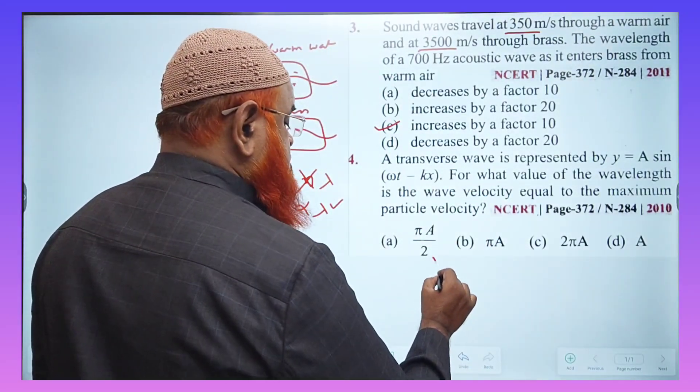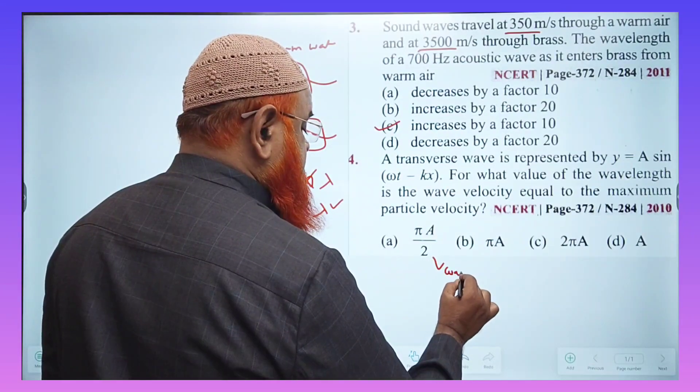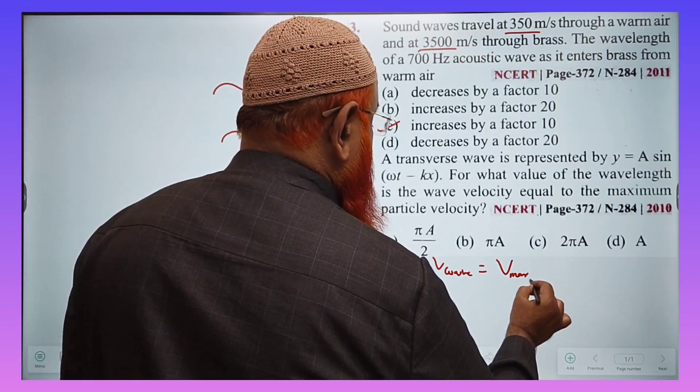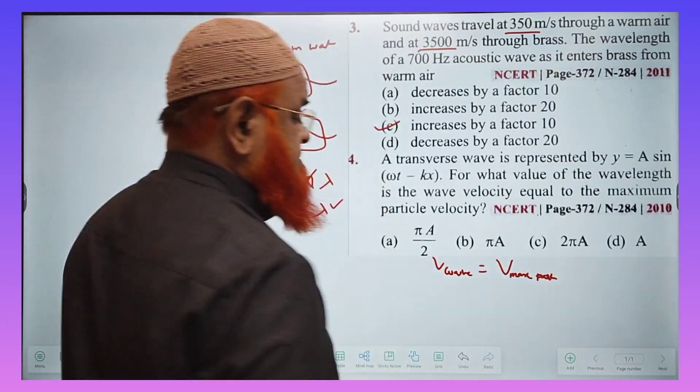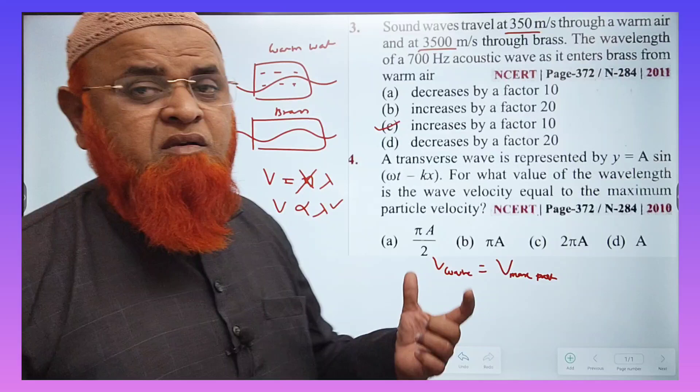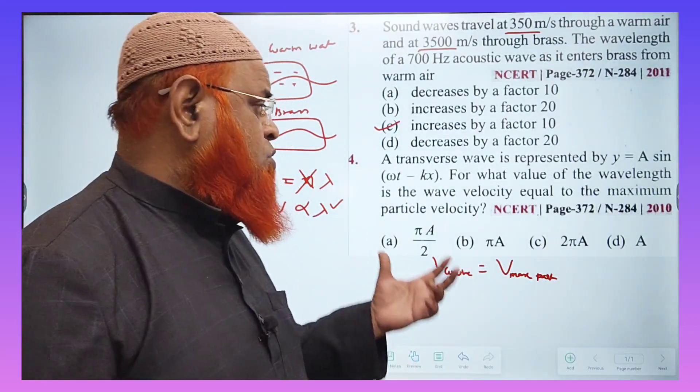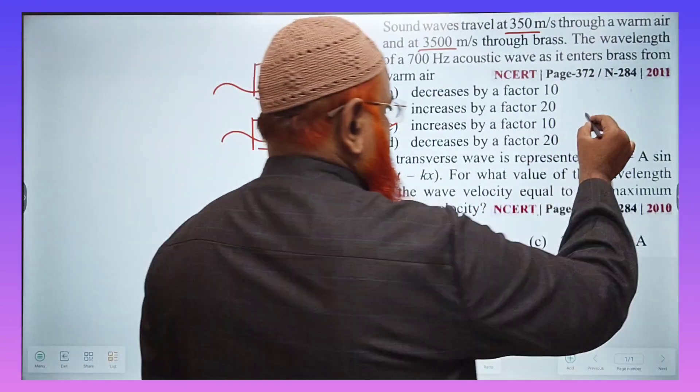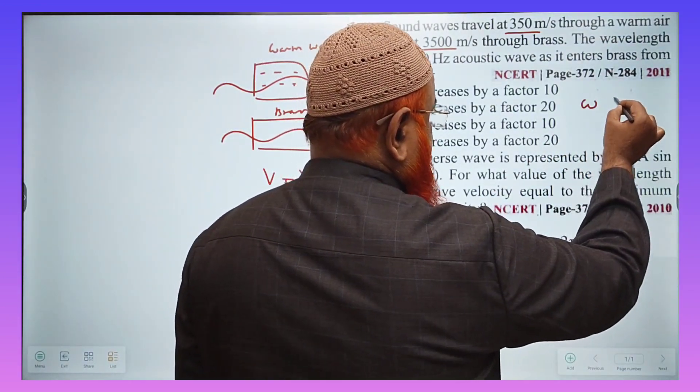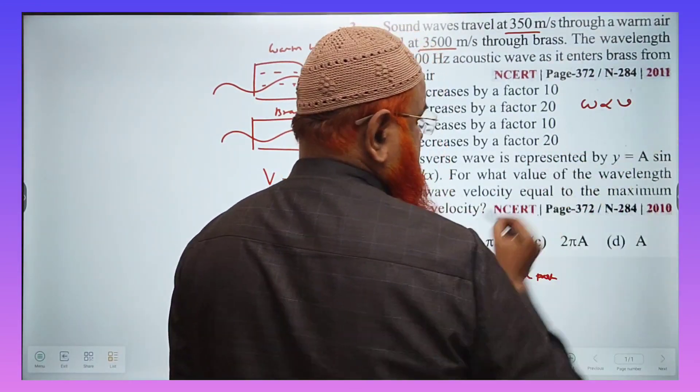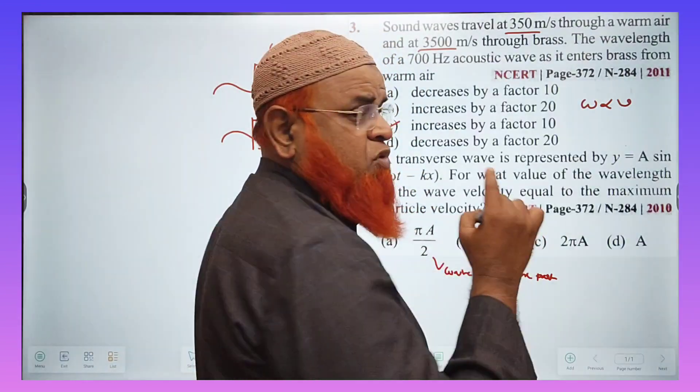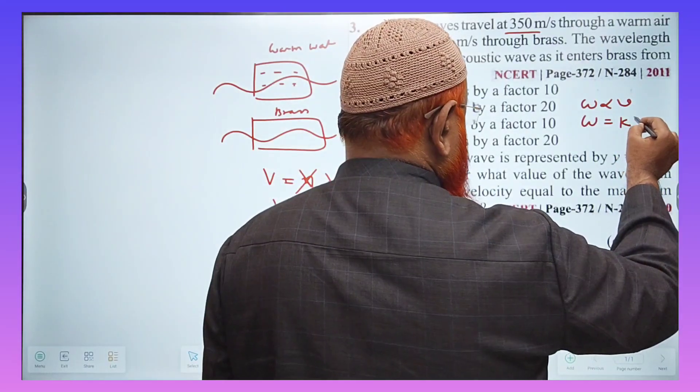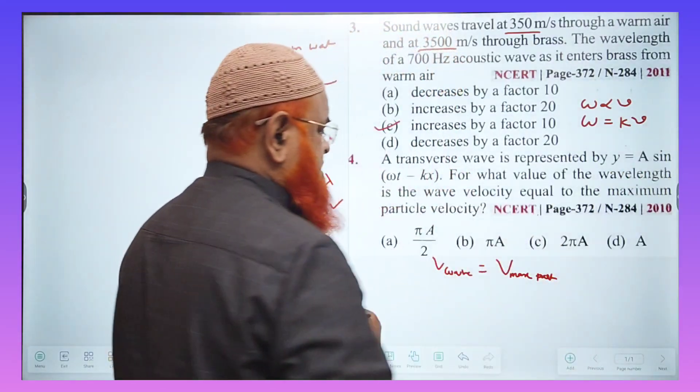So what is the wave velocity and what is the particle velocity? See here. Velocity of a wave is equal to maximum particle velocity. So this is a given condition here. So what is wave velocity formula?